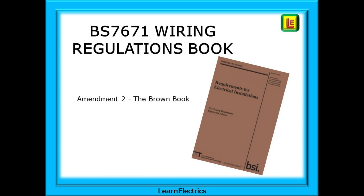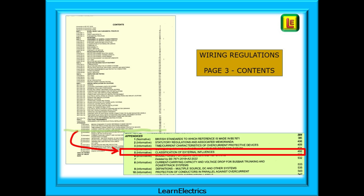Beginning with BS 7671 wiring regulations — where do we find IP codes in here? In this video it will be the brown Amendment 2 book that we use. Lots of people skip past the contents page on page 3, but this is very important in guiding you to the right part of the book. Towards the bottom of page 3 will be found Appendix 5, Classification of External Influences, a very useful appendix, and we are directed towards page 492 of the brown book.